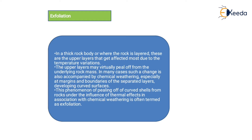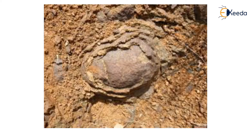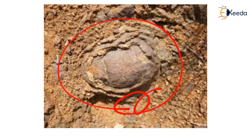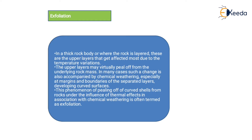The next type is exfoliation. Consider an onion — when we cut it, we peel off one layer, then another, then another. Similarly, because of the impact of agents, one layer of rock is removed, then another, and another. Because of this peeling off of layers, the rock's center portion remains while overlying layers are stripped away. This is called exfoliation, also called periglacial weathering. This type of weathering can take place both mechanically and chemically. In thick rock bodies, the upper layers get affected most due to temperature variation and may be virtually peeled off from the underlying rock mass.